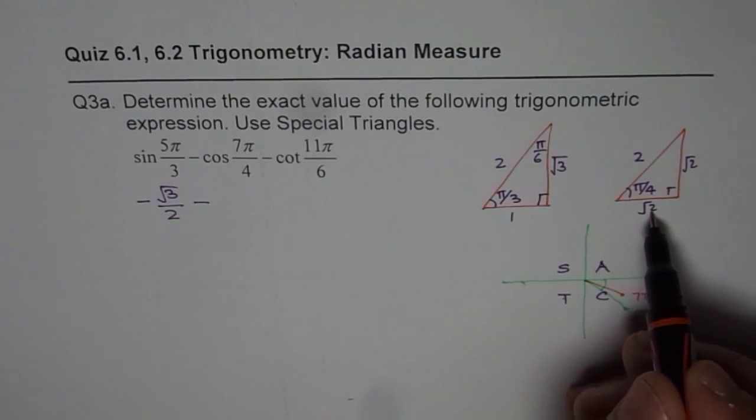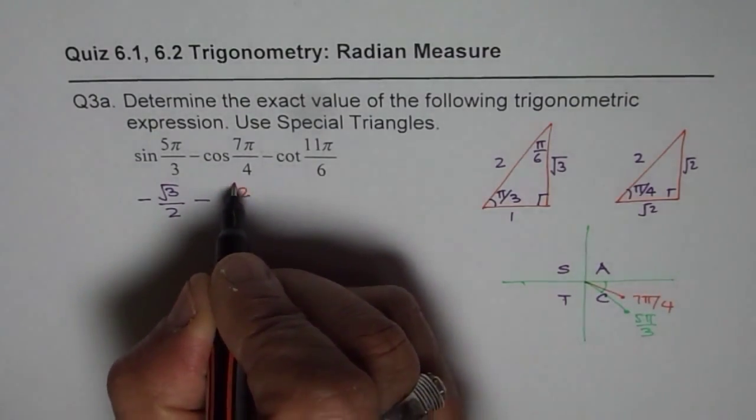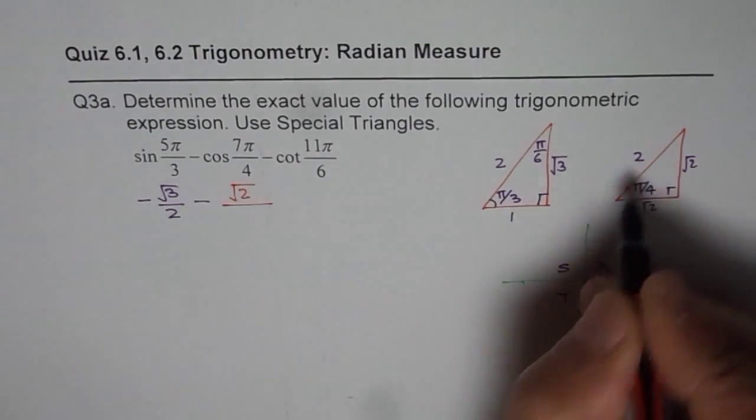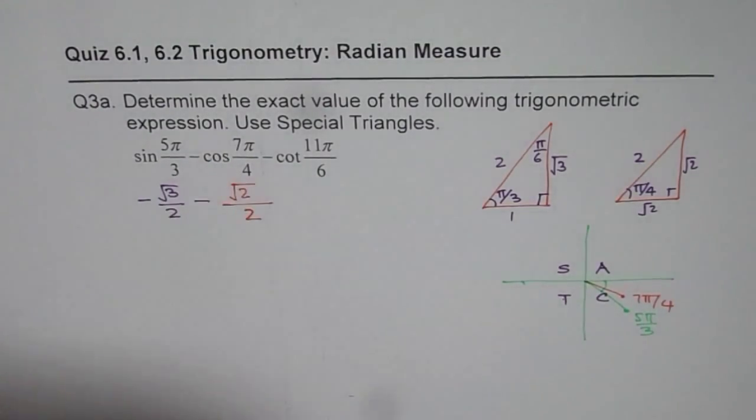We get cos as √2/2. So, that is the cosine value.